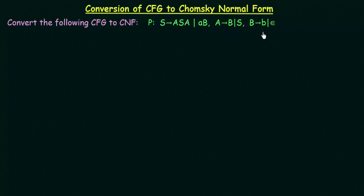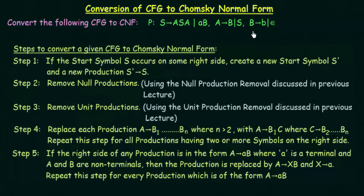Let me give a quick recap of the steps we have to follow. First, if the start symbol S appears in the right hand side of any production, we create a new start symbol S'. Second, remove all null productions. Third, remove all unit productions. Fourth, if any production has more than two variables on the right hand side, convert it to have only two. Fifth, if any production has a terminal symbol and a non-terminal together on the right hand side, convert it to contain either both variables or just a single terminal symbol.